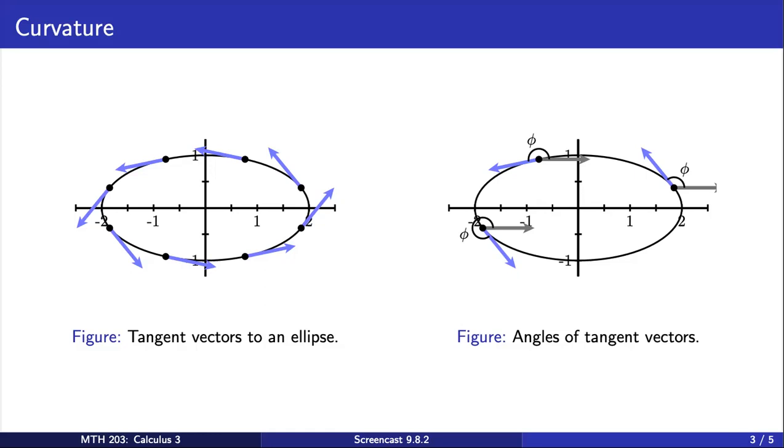To eliminate the dependence on speed, we choose to work with an arc length parameterization of the curve, which means we move along the curve with unit speed.